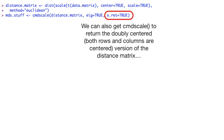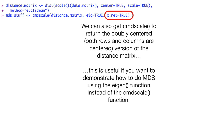We can also get cmdscale to return the doubly centered — i.e., both rows and columns are centered — version of the matrix. This is useful if you want to demonstrate how to do MDS using the eigen function instead of the cmdscale function. Originally I thought I was going to demonstrate how to use the eigen function to do multi-dimensional scaling, but in the end I really wanted to keep this practical. And if you're going to do MDS, you're going to use the cmdscale function.